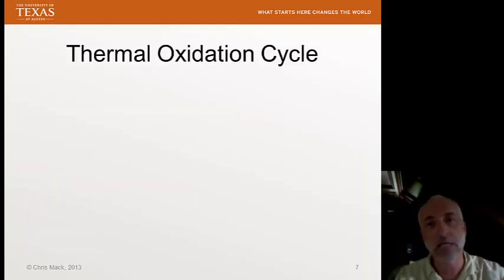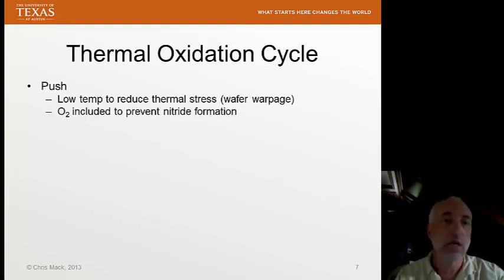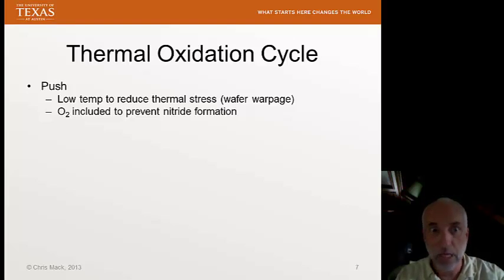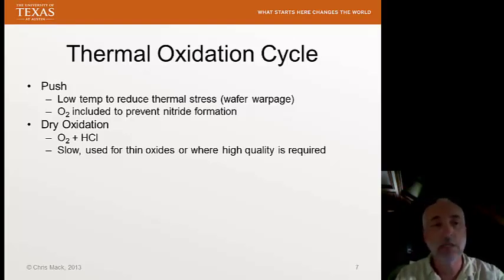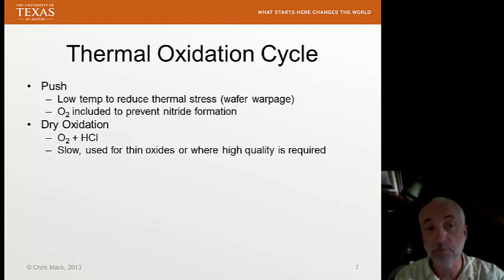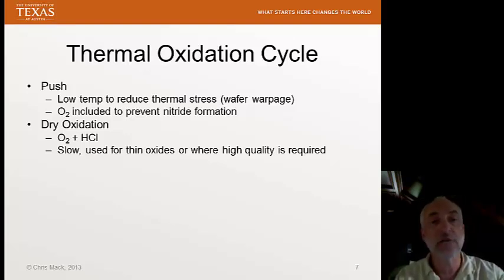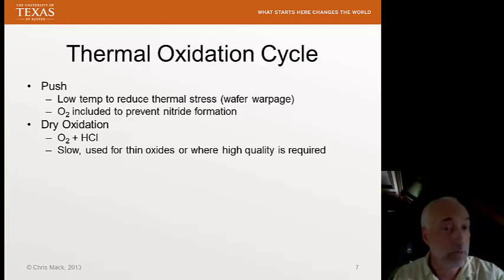Let's go through the thermal oxidation cycle again with some details. First, the push — we use a low temperature to reduce thermal stress; if it's too high a temperature when we bring the wafers in, we get warpage. We use a little bit of oxygen to prevent silicon nitride formation during that process. Then we have two kinds of oxidations: dry and wet. Dry oxidation means our reactant material is pure oxygen, with a little bit of hydrogen chloride added. Dry oxidation is slow — it takes a long time to grow — so we only use it for relatively thin oxides. If you want a really thick oxide via dry process, it can take 24 hours or more. But sometimes we need the highest quality films, because the highest quality films occur in dry oxidation.